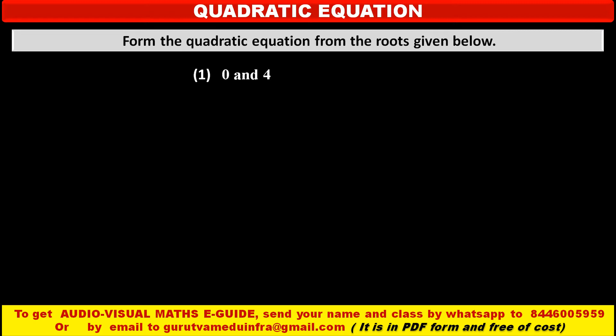Now, the first pair of roots is given here: 0 and 4. By using these roots, we have to form the quadratic equation. To form a quadratic equation by using given roots, we first have to find the sum of the roots and product of the roots.